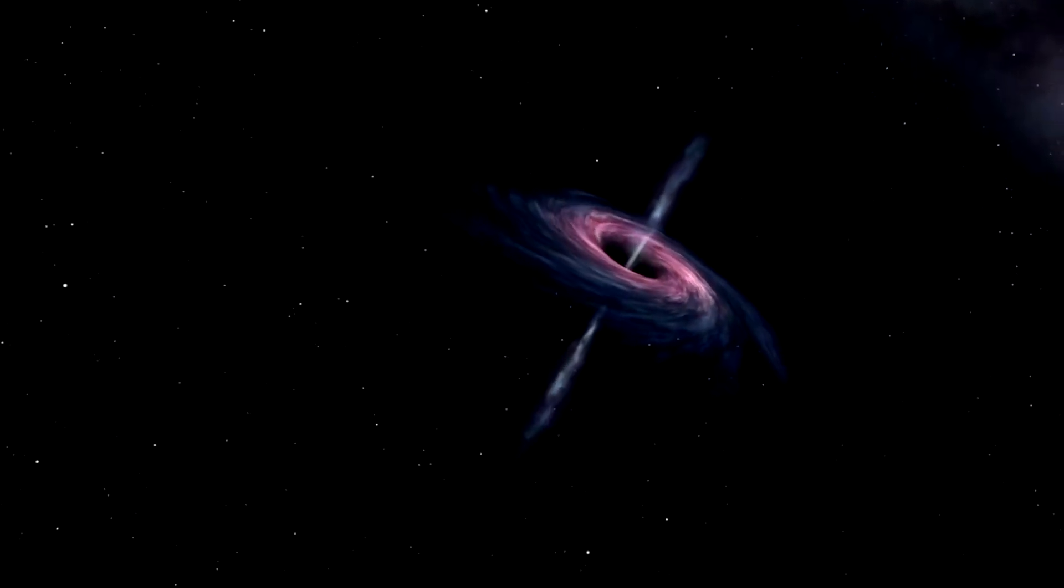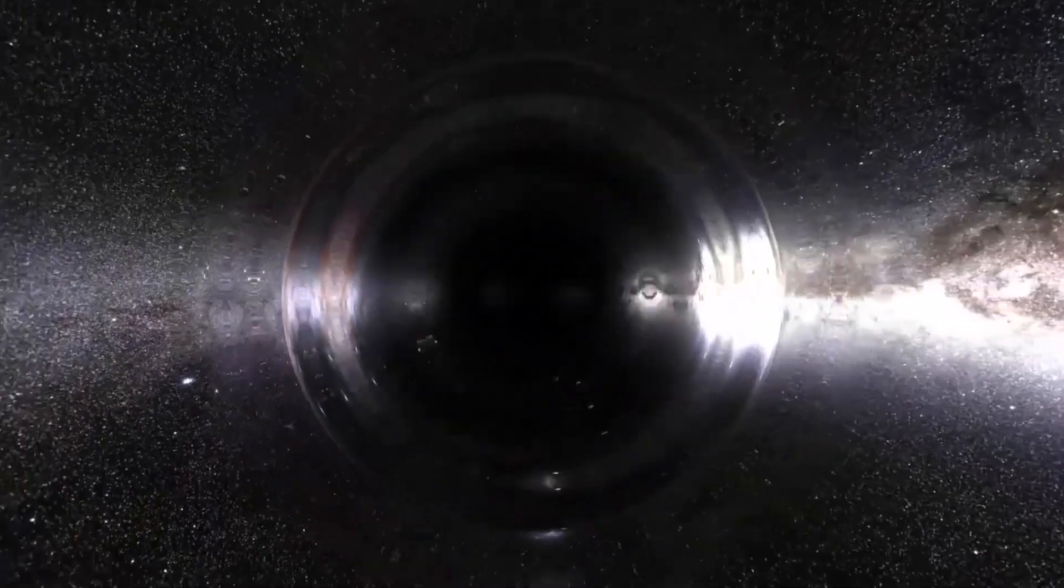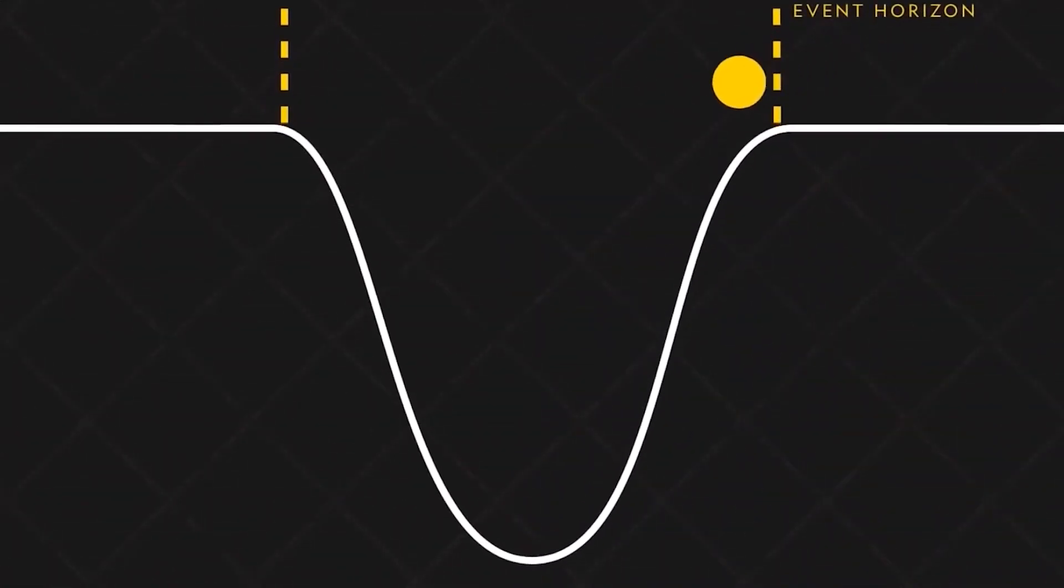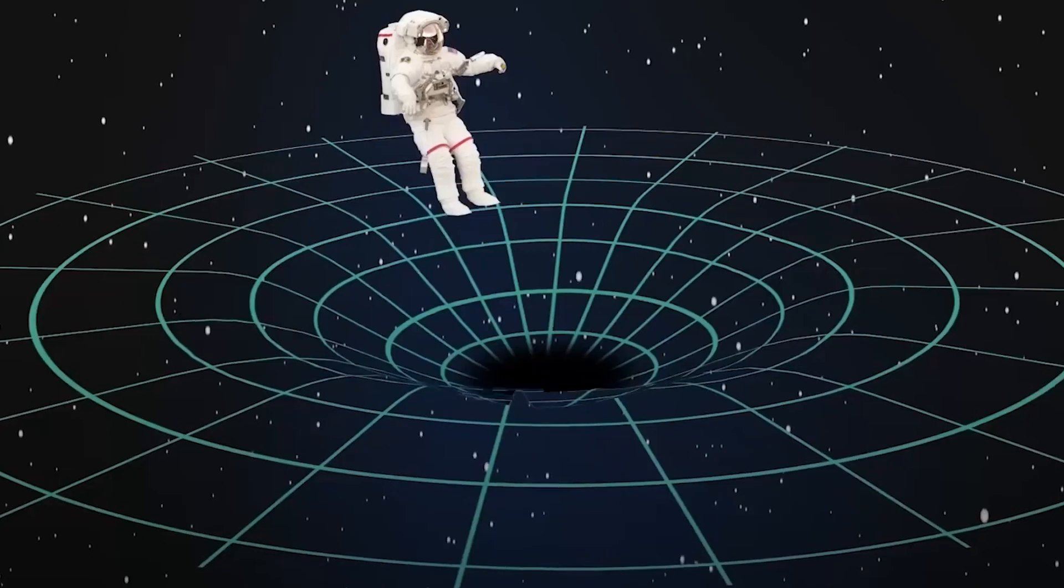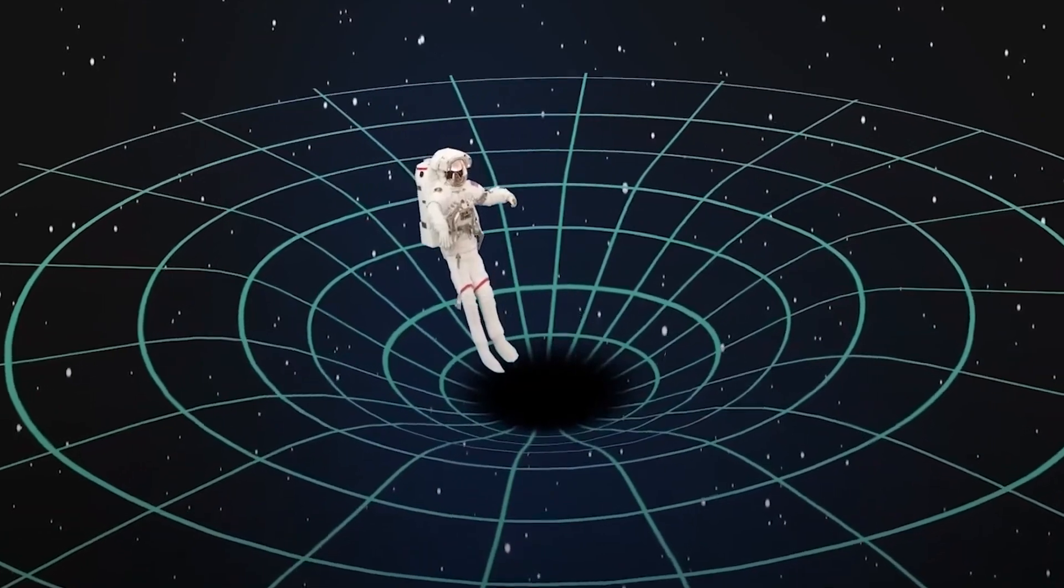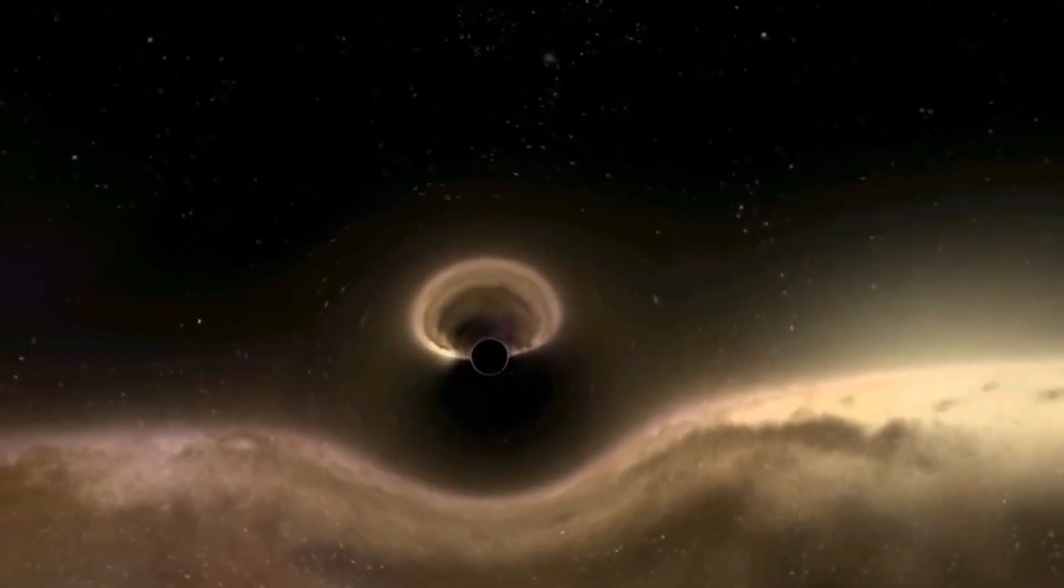According to Kaku's theory, the singularity at the core of a black hole is not a point of infinite density, as previously believed. Instead, it represents a highly compressed state of matter known as a cosmic crystal. This cosmic crystal is composed of exotic particles, and its properties defy conventional understanding, pushing the boundaries of our knowledge of the fundamental laws of physics.